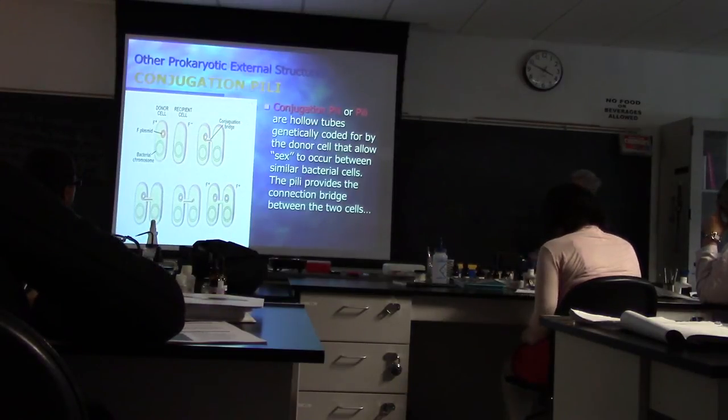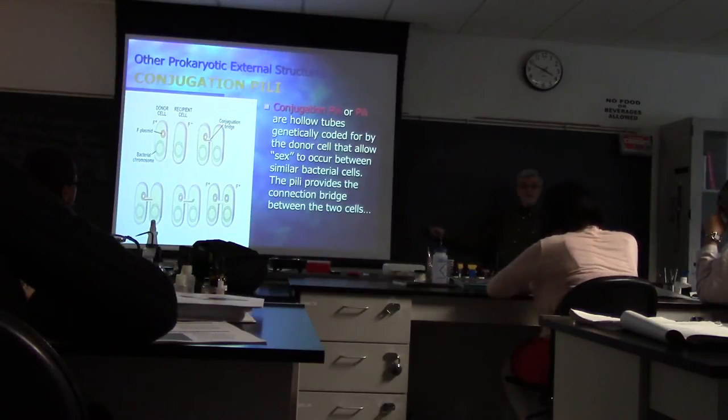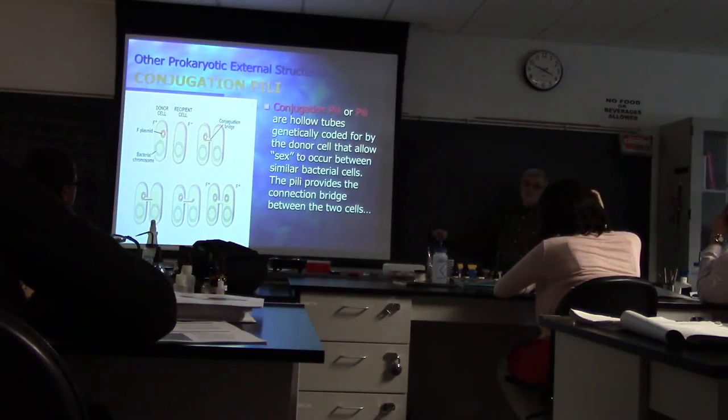If there's only a maximum of 50 on a plasmid, how can you move 51? Remember, there's another method of gene transfer called translocation — a gene from the chromosome can move to the plasmid and vice versa. So if a plasmid maximum is 50, you can also get 51 because of translocation.